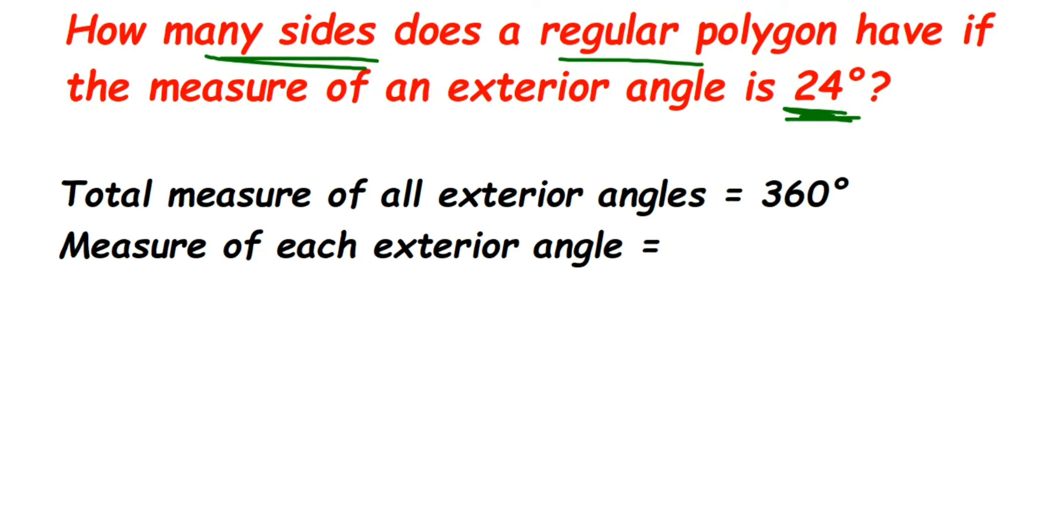So it doesn't matter if it is a triangle or a rectangle or a pentagon or hexagon - whenever you add all the exterior angles, it is always equal to 360 degrees. Now since it is a regular polygon, the measure of each exterior angle will be the same.